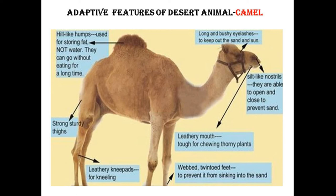Slit-like nostrils can open and close to prevent sand entry. The leathery mouth is tough for chewing thorny plants not consumed by other animals. Twin-toed feet prevent sinking into sand. Leathery knee pads allow safe kneeling, and strong sturdy thighs bear the animal's weight. The hill-like hump stores fat — not water — providing energy reserves during periods of food scarcity.